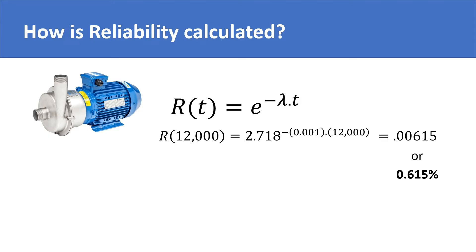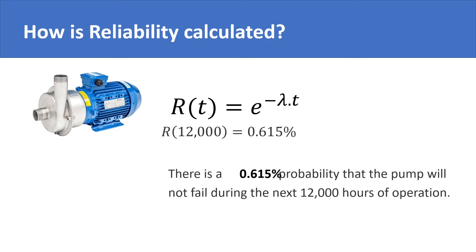So, what is its interpretation? Its interpretation is that there is a probability of 0.615% that the pump will not fail during the next 12,000 hours of operation. In simple words, the pump is bound to fail in the next 12,000 hours of operation. It is quite understandable, because remember, that the pump had a high failure rate.